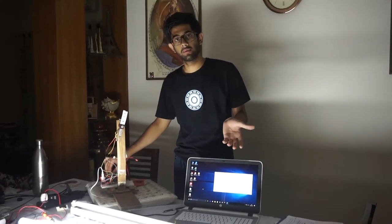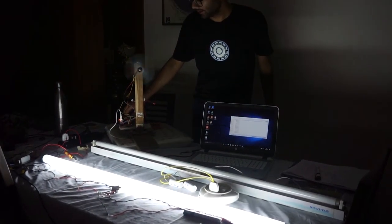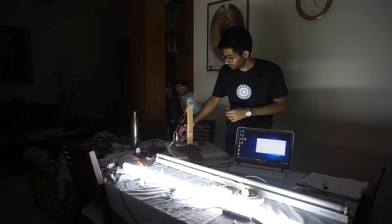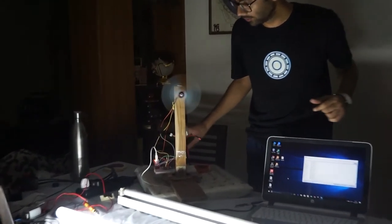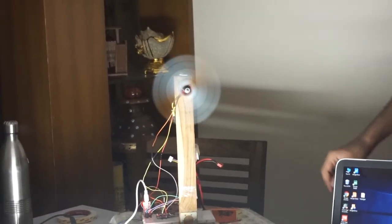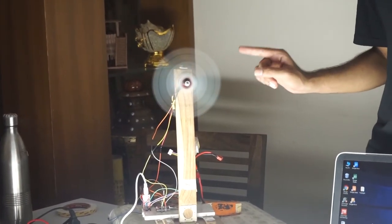Now we will eliminate this stroboscopic effect using a tube light which has capacitors in series. So now there is a normal tube light switched on and we can see the stroboscopic effect. Now I will switch on the other tube light which has capacitor in series. We can see that the stroboscopic effect has been greatly reduced.